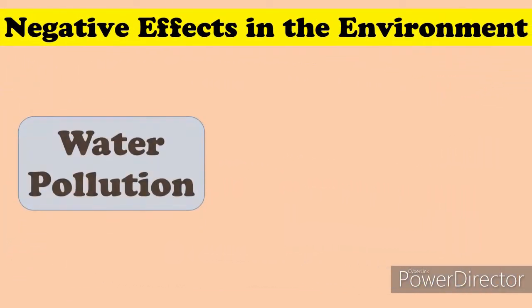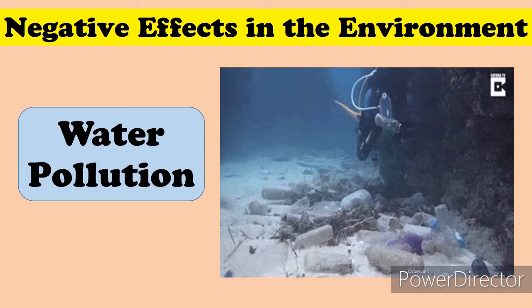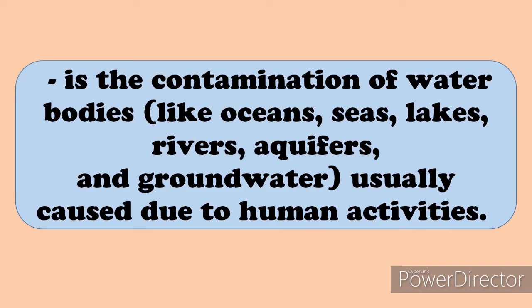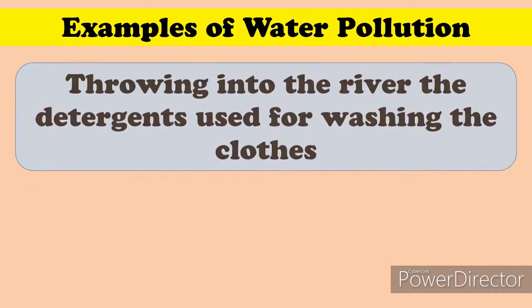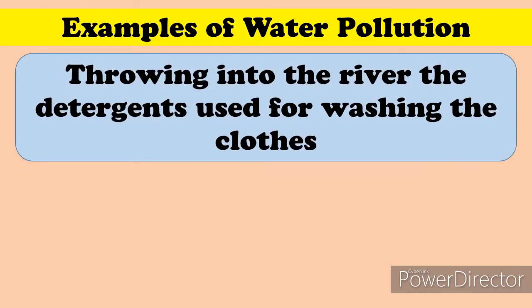Next is water pollution. It is the contamination of water bodies like oceans, seas, lakes, rivers, aquifers, and groundwater, usually caused by human activities. An example is throwing into the river the detergents used for washing clothes.